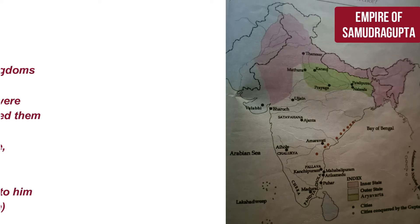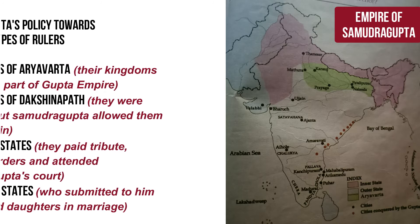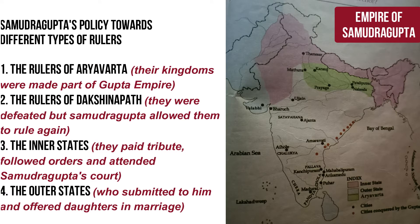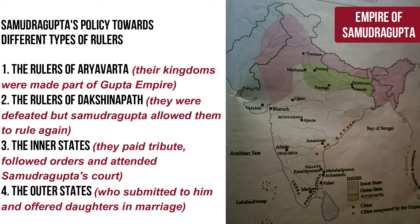In the long inscription at Allahabad, the poet enumerates the people and countries conquered by Samudra Gupta. Harisena describes four different kinds of rulers and tells us about Samudra Gupta's policies towards them. First are the rulers of Aryavarta — as seen in the map shaded in green — where nine rulers were uprooted and their kingdoms were made part of Samudra Gupta's empire.